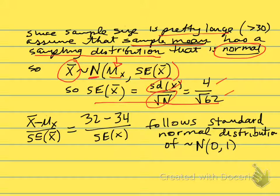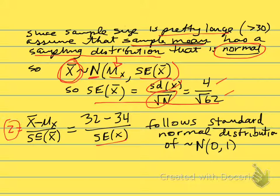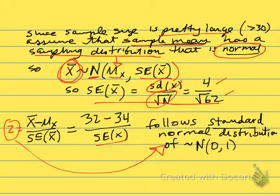The standard error is 4 divided by the square root of 62. We can define a variable Z as X-bar minus μ₀ divided by the standard error of X — that is, 32 minus 34 divided by the standard error. This variable Z follows the standard normal distribution centered on 0 with standard deviation 1. We often transform our variable into a standard normal distribution, just like we're doing here.